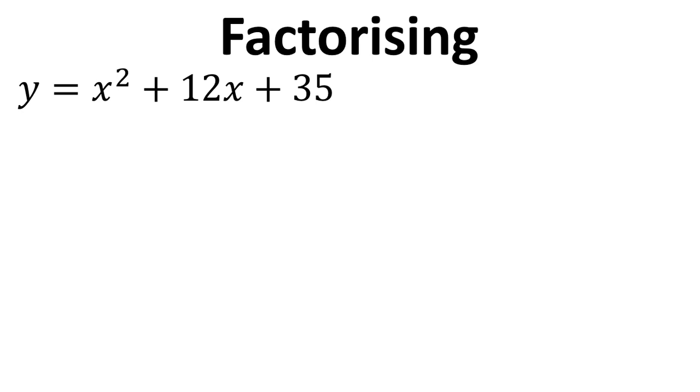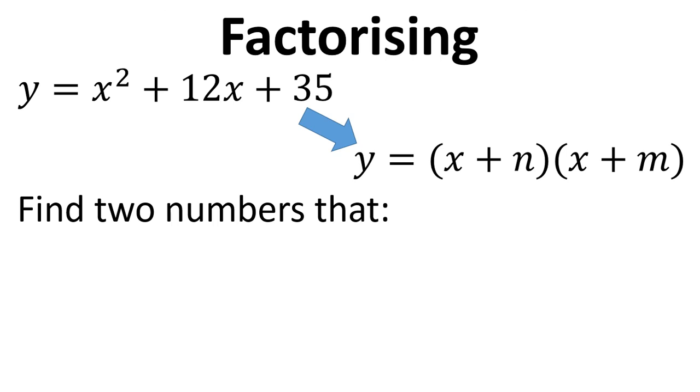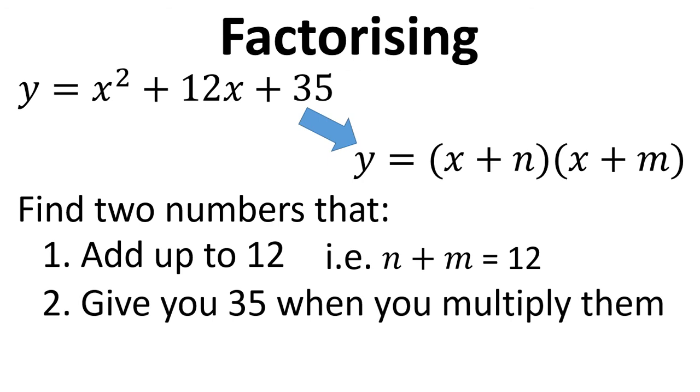Then just back to factorising for a moment. If we take this example, what we need to do is put it into this form, x plus n times x plus m, and we need to find two numbers that add up to 12, i.e. n plus m equals 12, and also the two numbers that give you 35 when you multiply them together, so n times m equals 35.